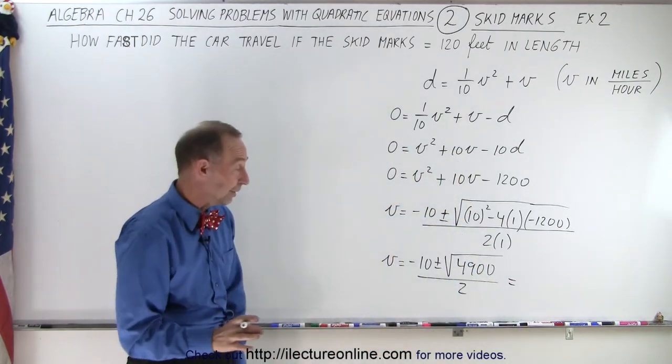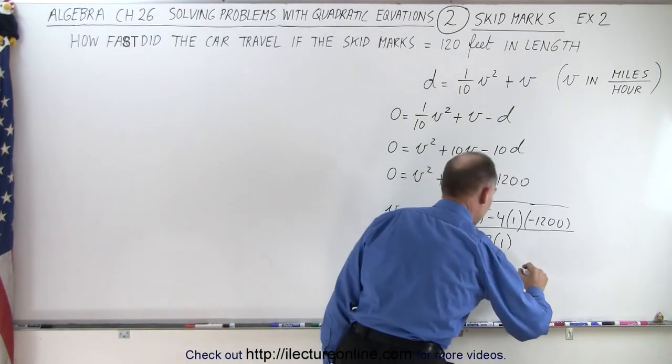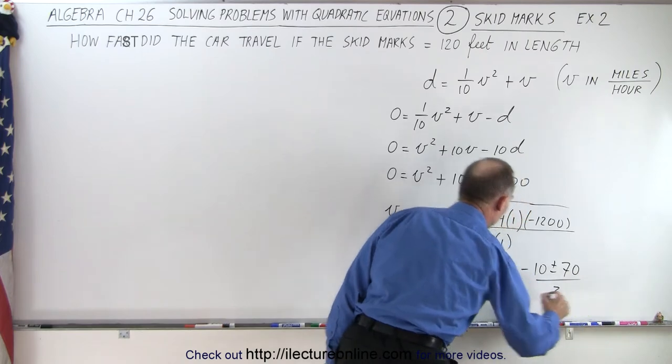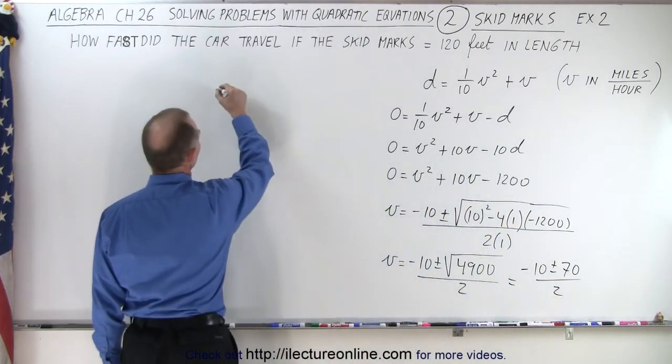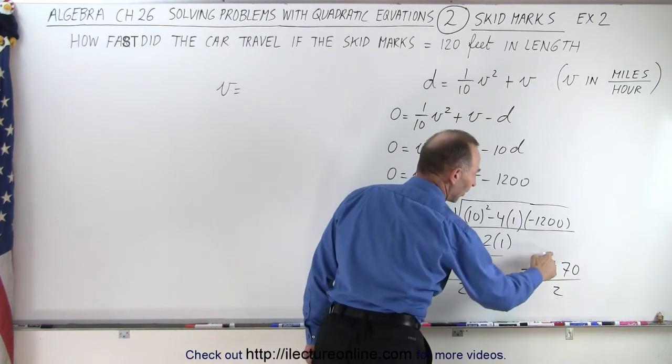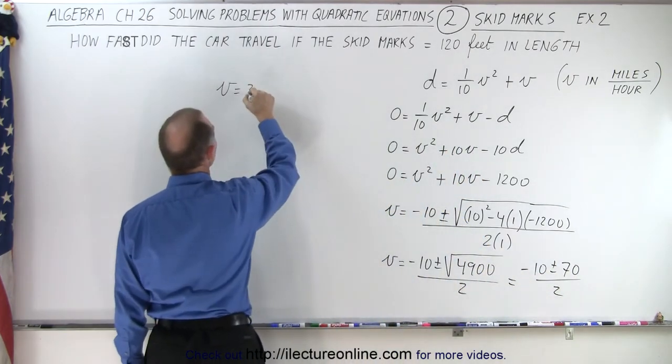Now the square root of 4900 looks like it's 70. So it'd be -10 plus or minus 70 divided by 2. So we have two possible values. V is equal to -10 + 70 that's +60 divided by 2. That would be 30.